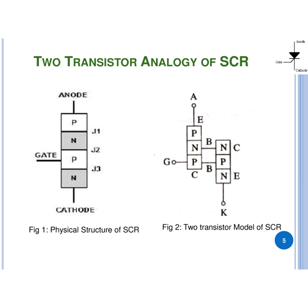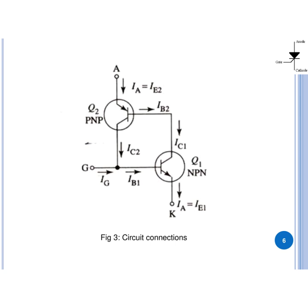Figure 3 represents the circuit diagram of the 2-transistor model. Here IE2 is the emitter current of transistor Q2 and it is equal to IA, that is the anode current, because the emitter terminal is connected with the anode. IB2 is the base current of transistor Q2 and it is equal to IC1, the collector current of Q1, since the base of Q2 and collector of Q1 are connected with each other. IC2 is the combination of IG plus IB1, where IG is the gate current and IB1 is the base current of transistor Q1, and IE1 is the emitter current of transistor Q1.